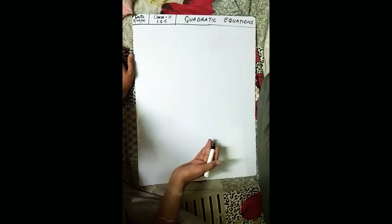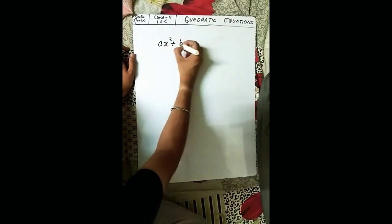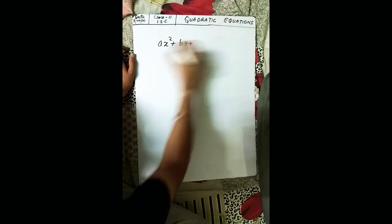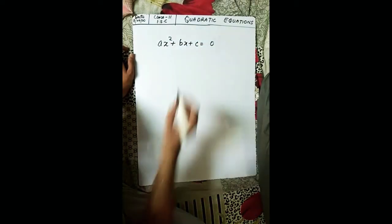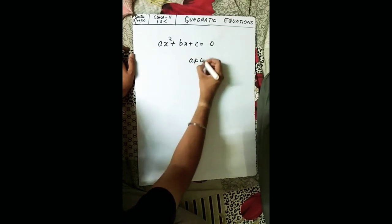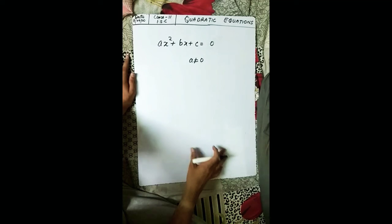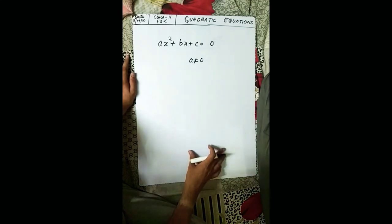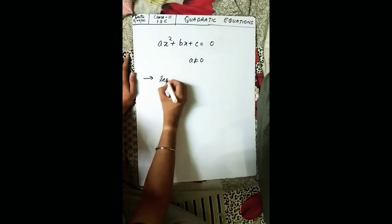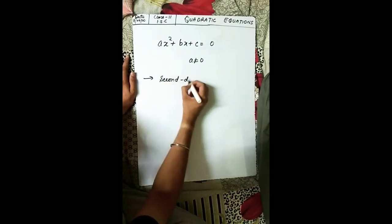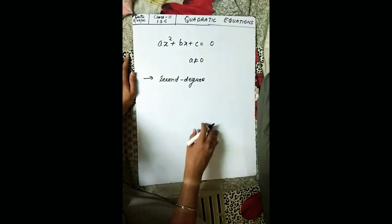The very first thing: what is the form of a quadratic equation? We already know the form is ax² + bx + c = 0, where the important condition is that 'a' shall not be equal to zero. If it is, then it won't be a quadratic equation. This is a second-degree equation because the highest power is 2.